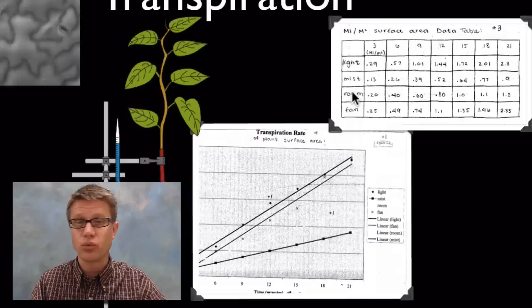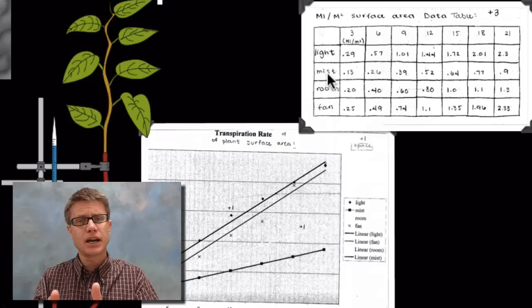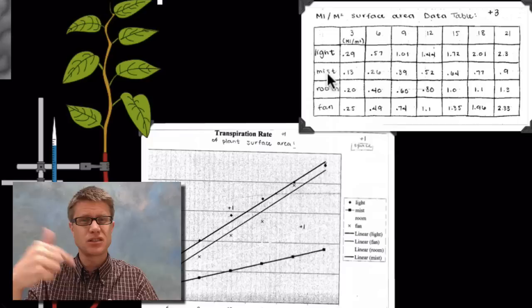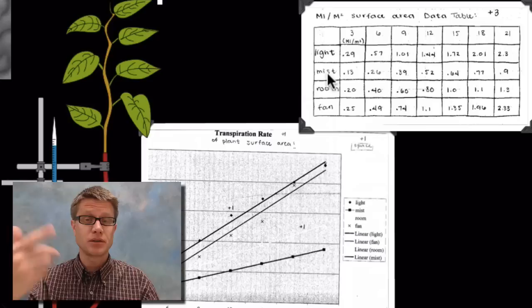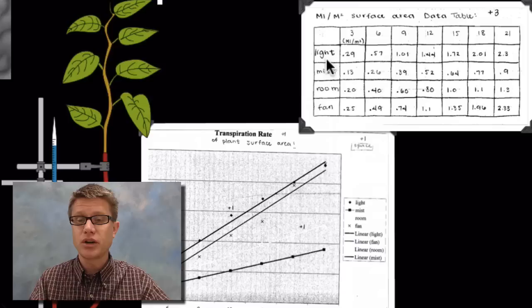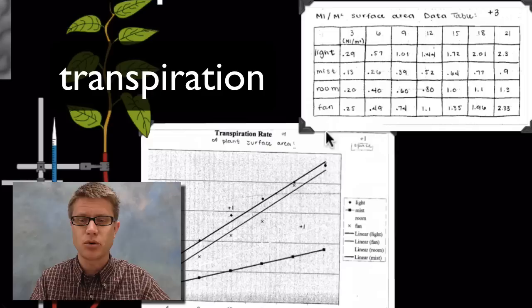In this lab we have a control, just room normal. We put a bag around one and increase humidity inside. That's going to slow down transpiration by increasing water potential. The other two we add light, which speeds up respiration, and a fan or wind which speeds it up. Anything that increases evaporation increases rate of transpiration.